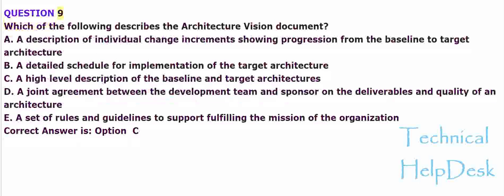Question 9. Which of the following describes the architecture vision document? A. A description of individual change increments showing progression from the baseline to target architecture. B. A detailed schedule for implementation of the target architecture. C. A high-level description of the baseline and target architectures. D. A joint agreement between the development team and sponsor on the deliverables and quality of an architecture. E. A set of rules and guidelines to support fulfilling the mission of the organization. Correct answer is Option C.